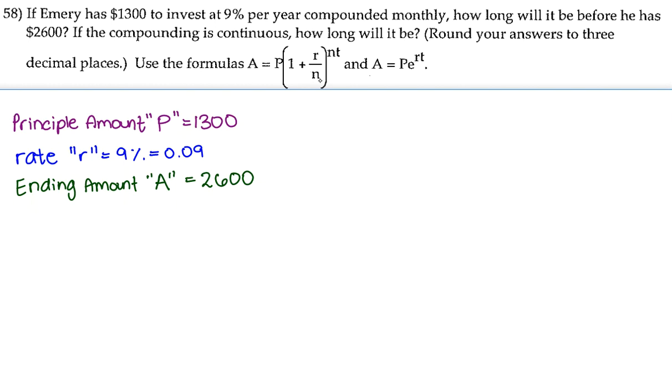Let's plug in what we have into our formula. Our ending amount is $2,600. Our principal amount is $1,300. Our rate is 0.09. And we are compounding monthly, so 12 times in a year.